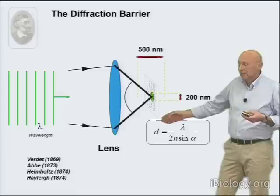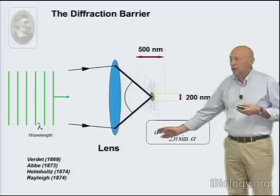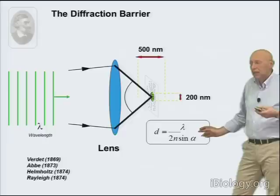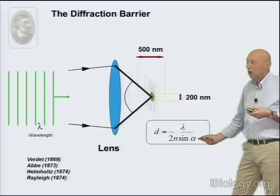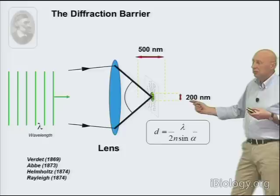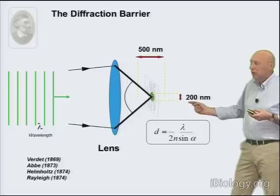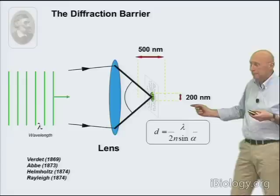The person who realized this was Abbe, who formulated the diffraction resolution barrier in an equation. Two features of the same kind, in order to be separated by a light microscope, have to be further apart than the distance d, given by the wavelength of light divided by twice the so-called numerical aperture of the objective lens. This value amounts to at least about 200 nanometers, up to 300, 400, or 500 nanometers. This is the reason why people have thought that a light microscope will not be able to do any better than that.